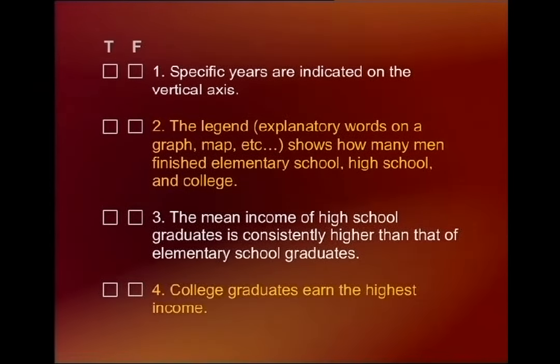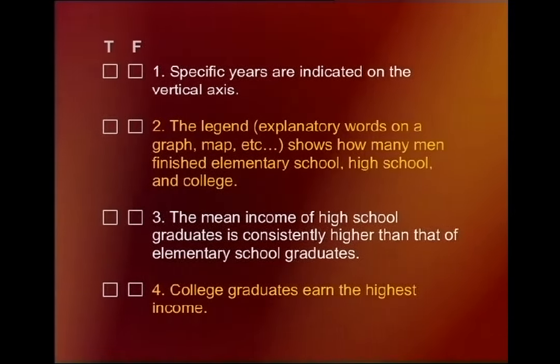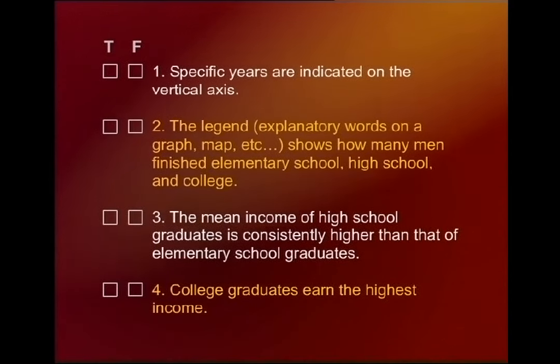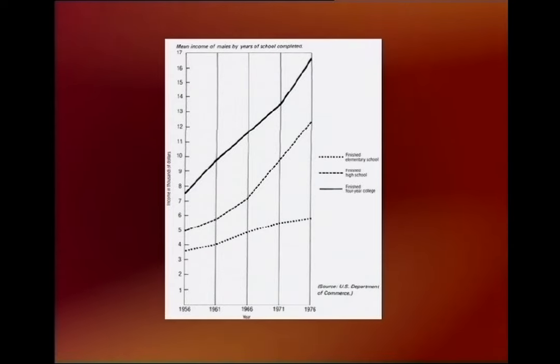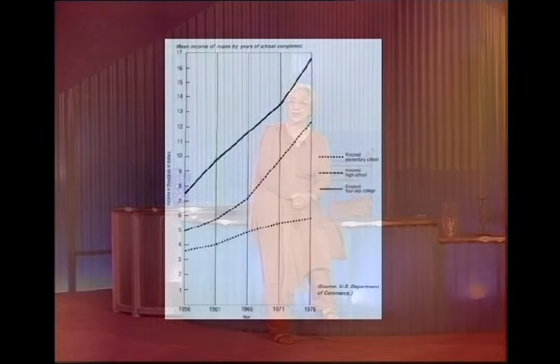The first one: 'Specific years are indicated on the vertical axis.' Look carefully — are specific years indicated on the vertical axis? I hope you know the difference between vertical and horizontal. Vertical goes straight up; horizontal goes across. The answer is false.